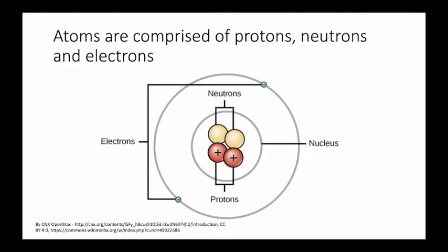Today we're going to talk about atomic structure and electron configuration. You already know that atoms are comprised of protons, neutrons, and electrons.